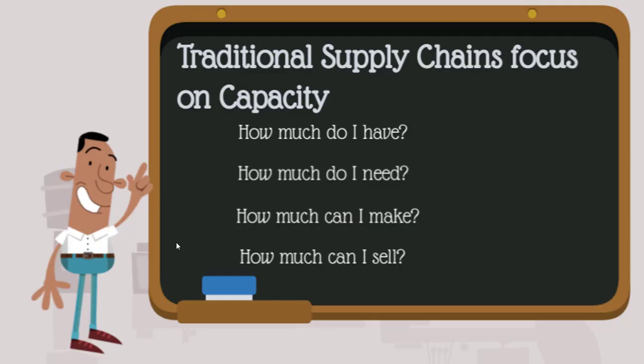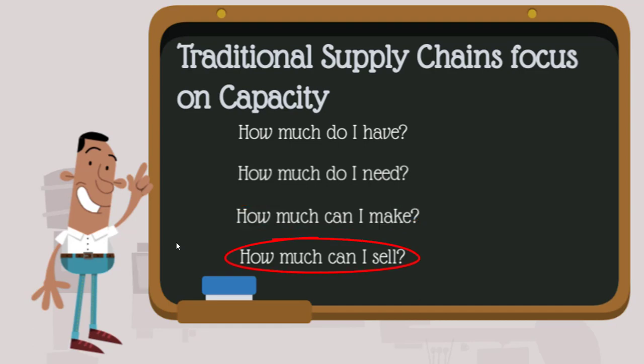Traditional supply chains tend to focus on questions of capacity — basically, how much do I have in the supply chain, how much do I need, what is the demand and expected demand, how much can I make, can my throughput or capacity meet my demand, and how much can I sell? Not being able to align what I sell with what the demand is will result in overcapacity and an inability to sell everything that you make.